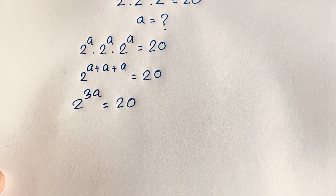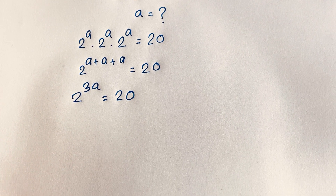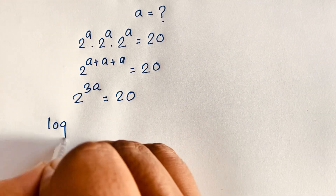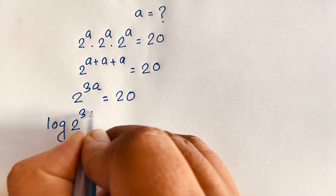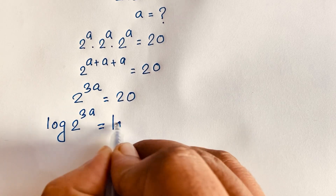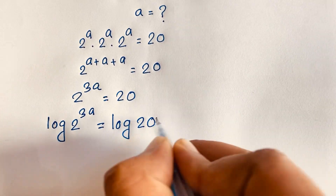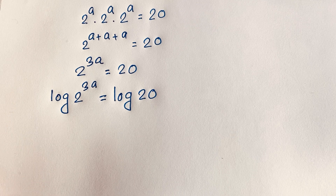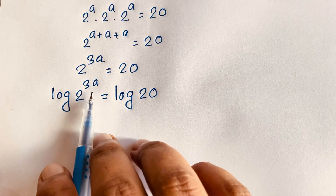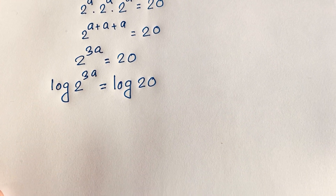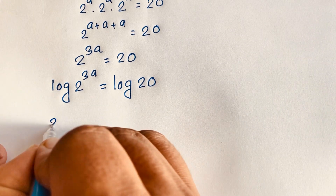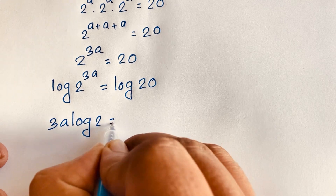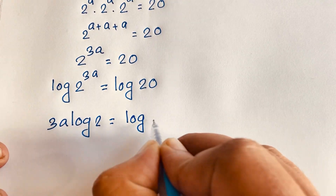Then I take the log of both sides. So I can see easily here is log of 2 to the power 3A is equal to log 20. According to logarithm rules, the exponent comes down in front, so I can see easily here is 3A times log 2 is equal to log 20.